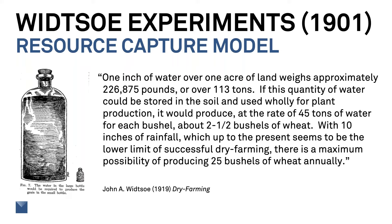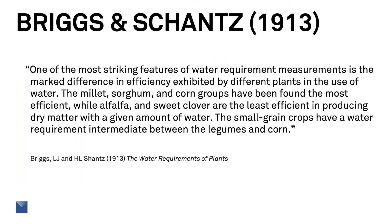With 10 inches of rainfall — which is about the present lower limit of successful dry farming — there's a maximum possibility of producing 25 bushels of wheat annually.